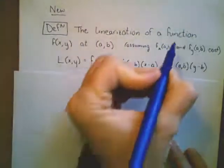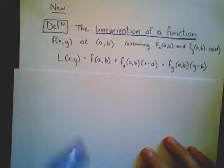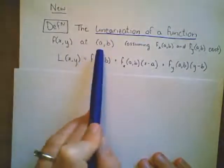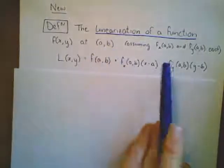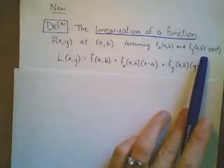So by definition, the linearization of a function, let's call our function f of xy, and we're going to look at its linearization at the point ab. We're going to assume that the partial derivatives f sub x of ab and f sub y of ab exist.